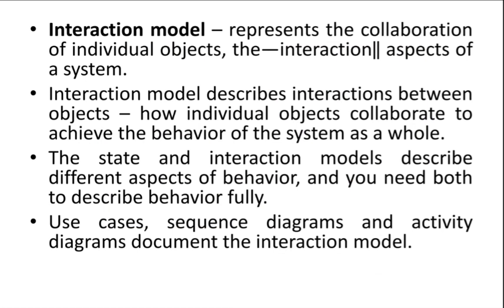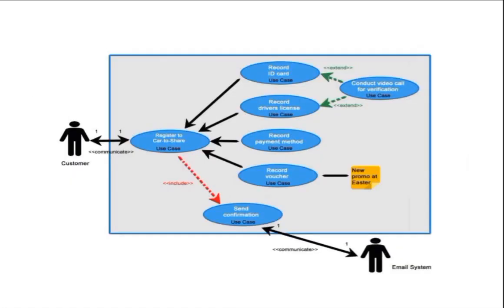You can observe that the details in the class model are different from those in the state model. Each model gives different details — that's why a model is abstract. One model gives the details that are necessary for it. The interaction model gives interaction details, not class details or state details. Each model gives different details. Hope you understood the concept. If you have any doubts, you can post them in the comment section. Thank you for watching the video.